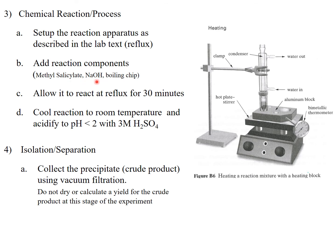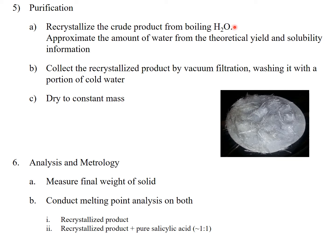We're going to add our reaction components to the reaction vessel: methyl salicylate, sodium hydroxide, and a boiling chip to help maintain even boiling. We'll allow this to reflux for 30 minutes, then cool the reaction to room temperature and add sulfuric acid to form the salicylic acid. At that point, we'll collect our precipitate by vacuum filtration, but we won't isolate and weigh it yet — we'll go right on to recrystallize it first, so don't calculate any yields at this point. We're going to recrystallize the crude product in boiling water and calculate the minimum amount of water required based on our theoretical yield, depending on how much methyl salicylate we actually weigh out.